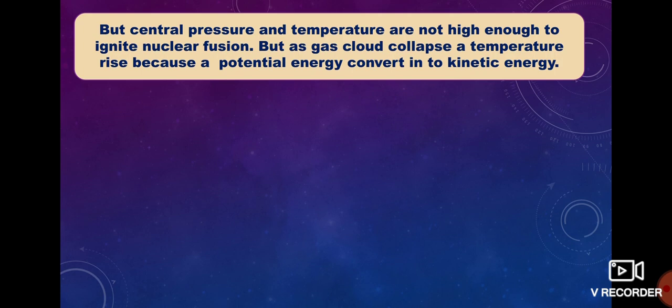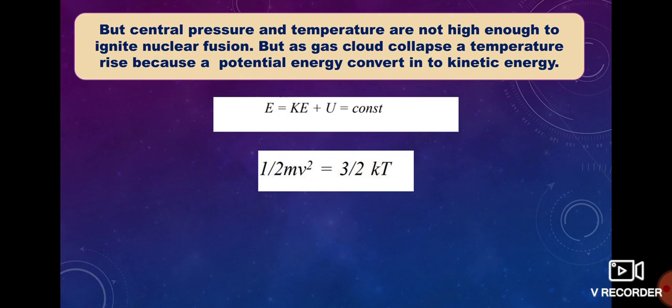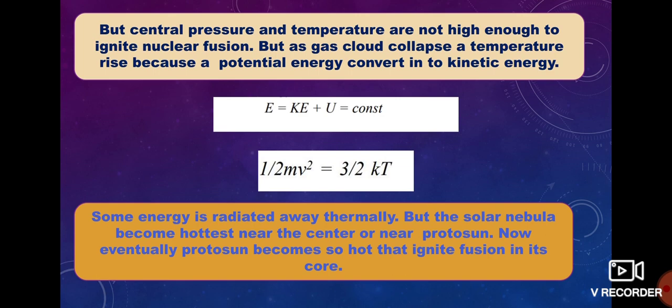The central pressure and temperature were not initially high enough to ignite nuclear fusion. But as the gas cloud collapsed, the temperature rose because potential energy was converted into kinetic energy. By this relation, if potential energy decreases, kinetic energy increases. By the kinetic energy equation, if kinetic energy increases, temperature also increases, because kinetic energy is directly proportional to temperature. Some energy is radiated away thermally, but the solar nebula becomes hottest near the center, or protosun.